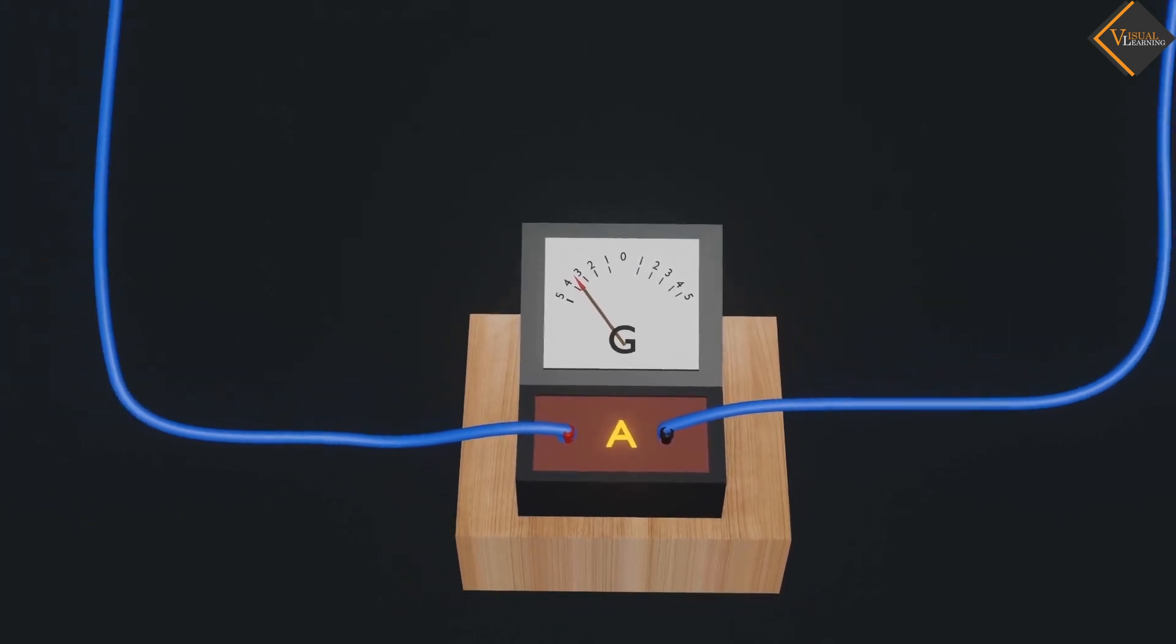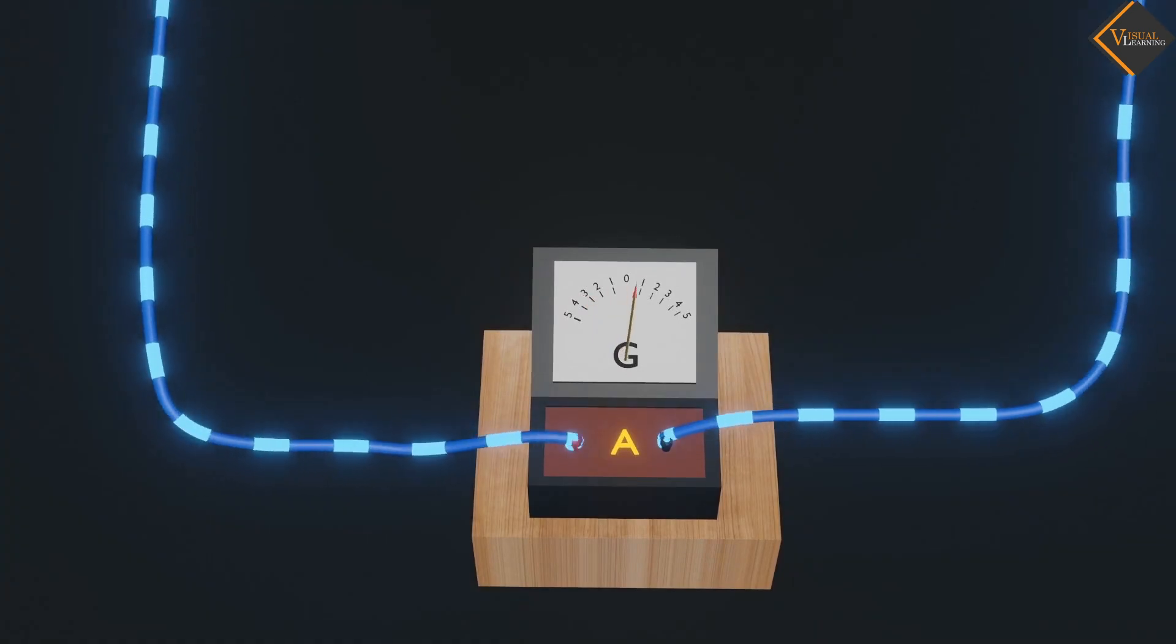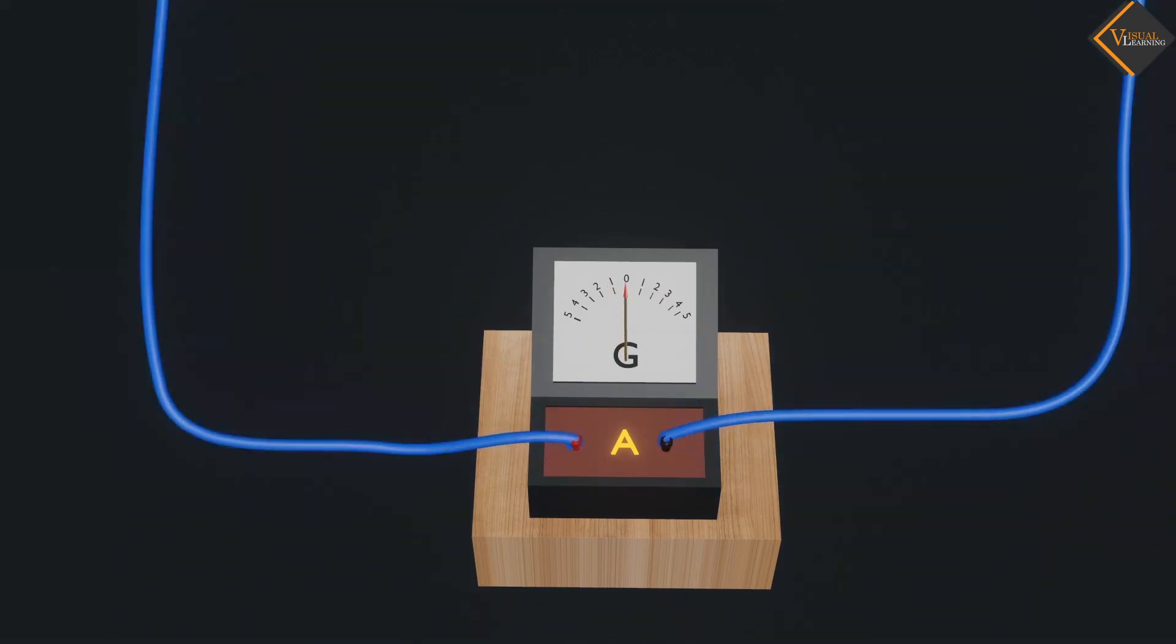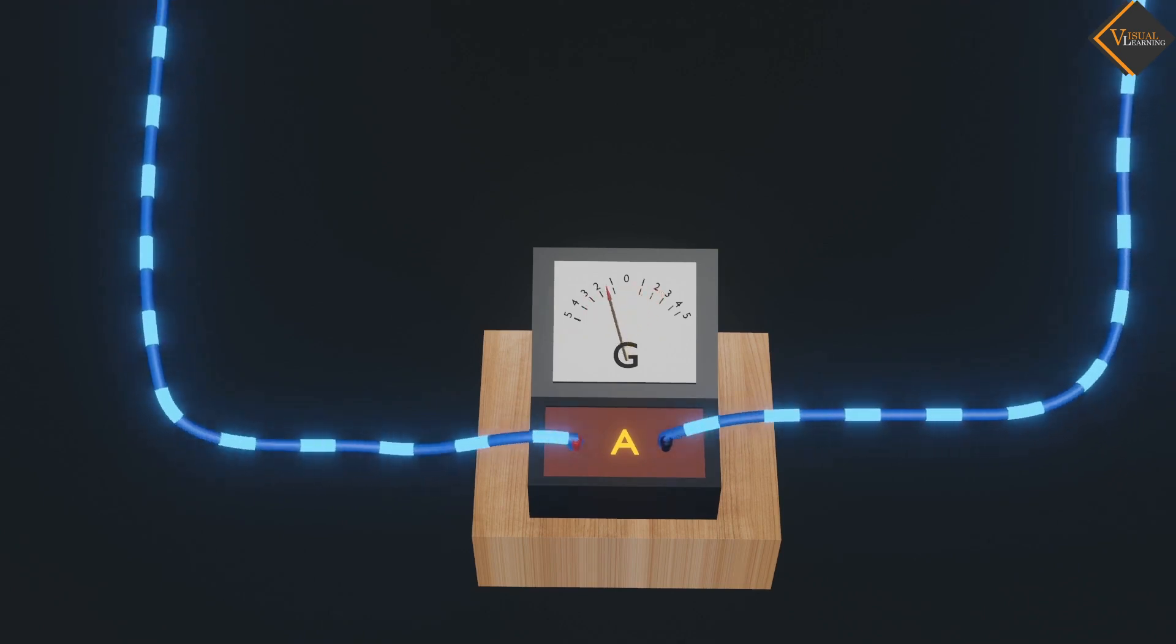A galvanometer is an instrument that can detect the presence of a current in a circuit. The pointer remains at zero for zero current flowing through it. Galvanometer can deflect either to the left or to the right of the zero mark depending on the direction of current.